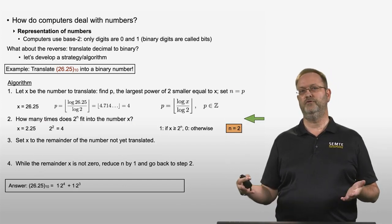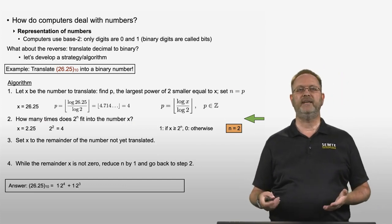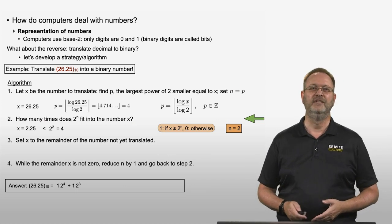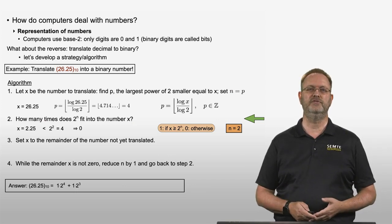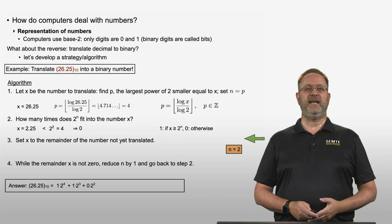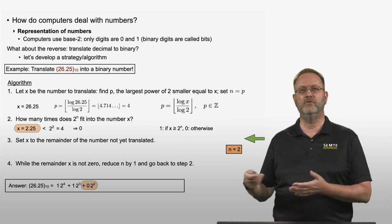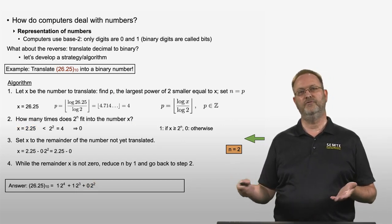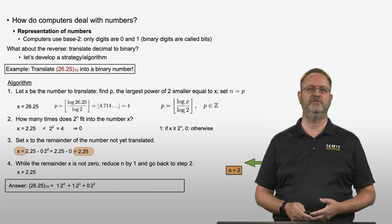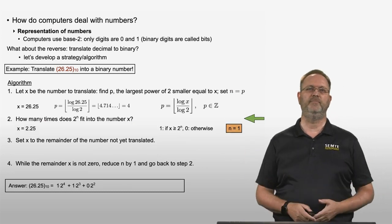Now we compare the remainder 2.25 to 2 to the power 2, which equals 4. Since 2.25 is smaller than 4, the digit is 0. We write plus 0 times 2 to the power 2. Step 3: x remains 2.25 (subtracting 0 changes nothing). The remainder is still not zero, so we reduce n from 2 to 1 and go back to step 2.